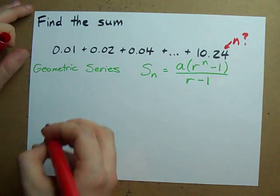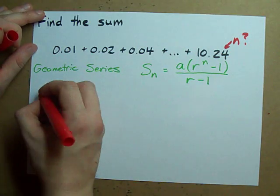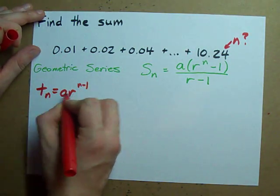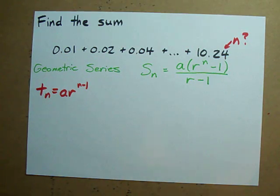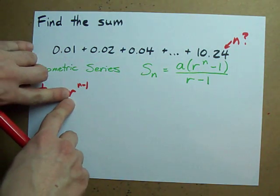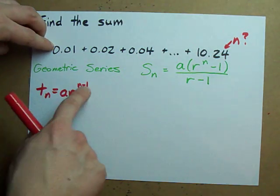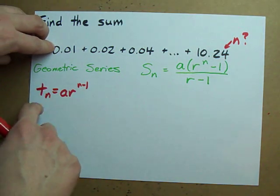We have to use the formula for a geometric sequence. Do you remember this? TN is AR to the N minus 1. This is a term. First term. Common ratio. And the index of whatever term you plugged in here.